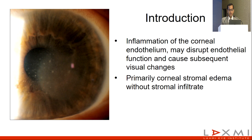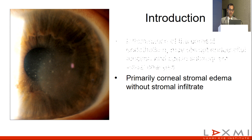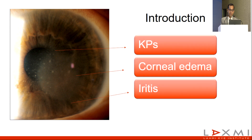HSV endothelitis is an inflammation of the corneal endothelium which may disrupt the endothelial function and cause subsequent visual changes. We primarily see corneal stromal edema without any dense stromal infiltrations. The three most important aspects of this entity are the stromal edema, the KPs which we see behind the corneal edema, and the simultaneous uveitis which happens in these cases.